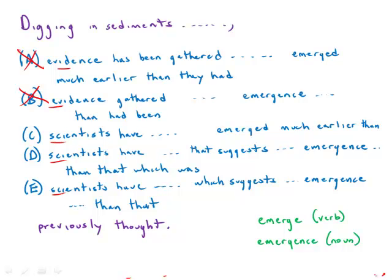Now there are a few things I'll point out about these remaining answer choices. First of all, notice that all five answer choices flip-flop between emerge and emergence. So we're going back and forth between emerge, a verb form, and emergence, a noun form.